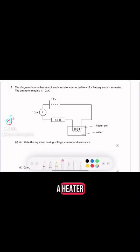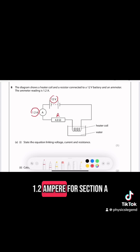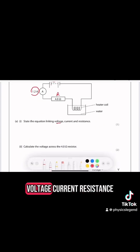Hi, in this question we have a heater coil and resistor connected to a 12 volt battery and an ammeter reading 1.2 ampere. For section A, state the linking equation for voltage, current, and resistance.